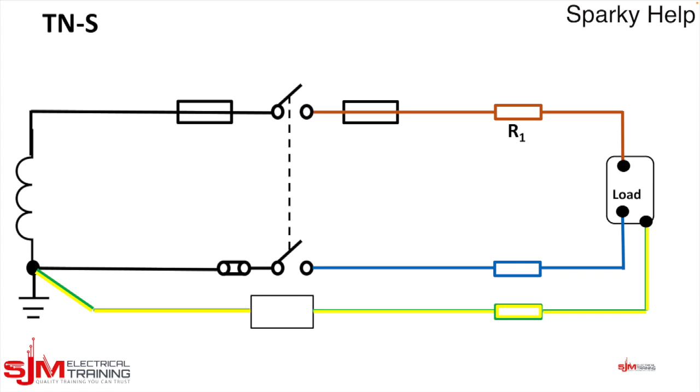What do we need to show now? Well we need to label a few things. So we'll call this one, as it's a resistor, we'll call this R1. This one RN and R2 or the CPC. So we have the line, the neutral and the CPC.